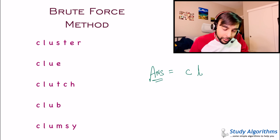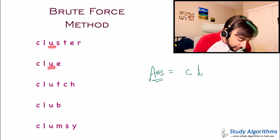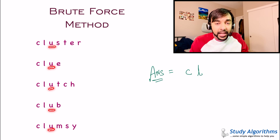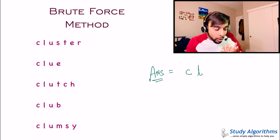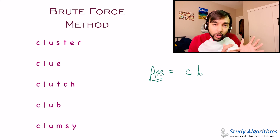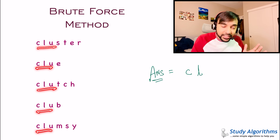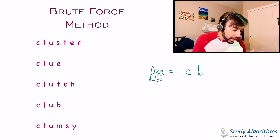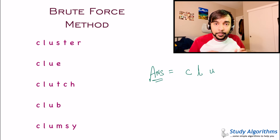Keep moving ahead. Next, I see the letter U. I will find a U again everywhere. And hence, this is also adding up to the longest common prefix — you see that you can find the same sequence of letters everywhere. So add U also to the answer.